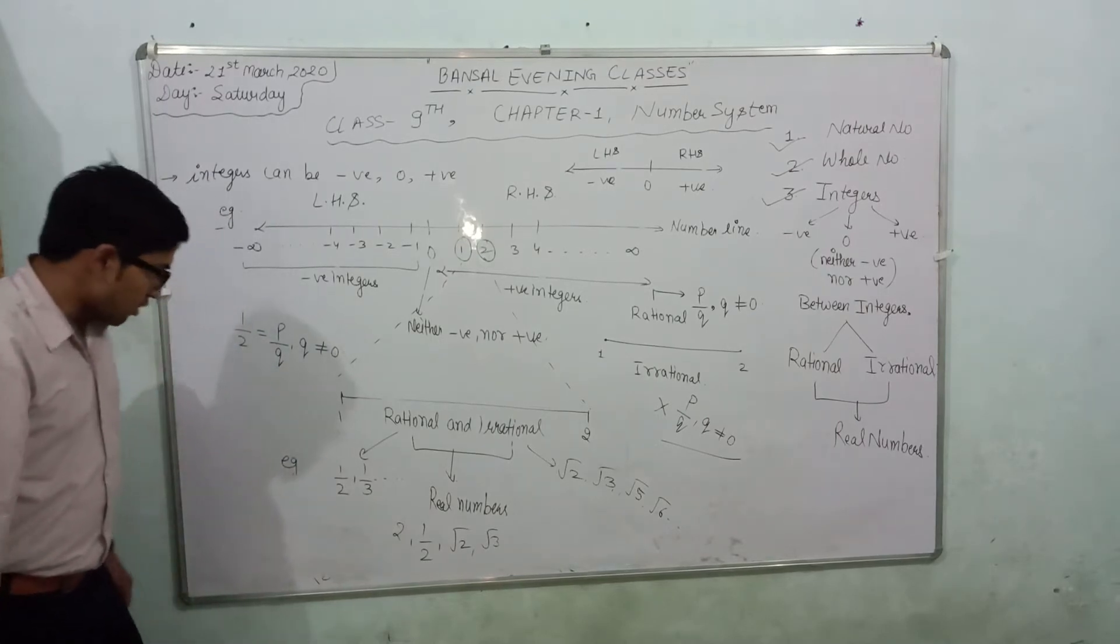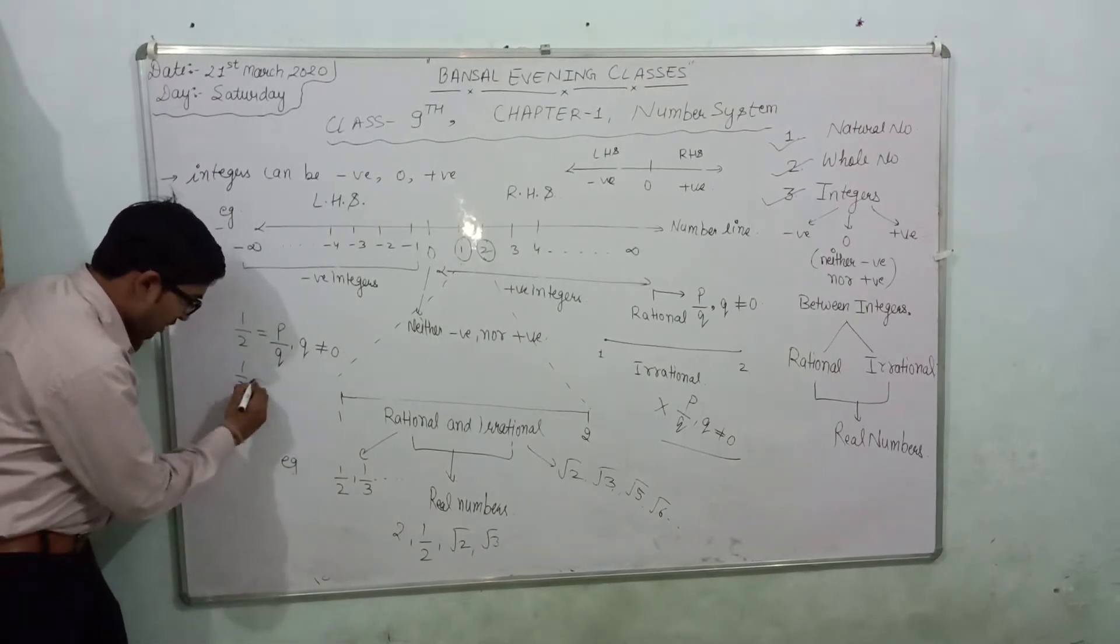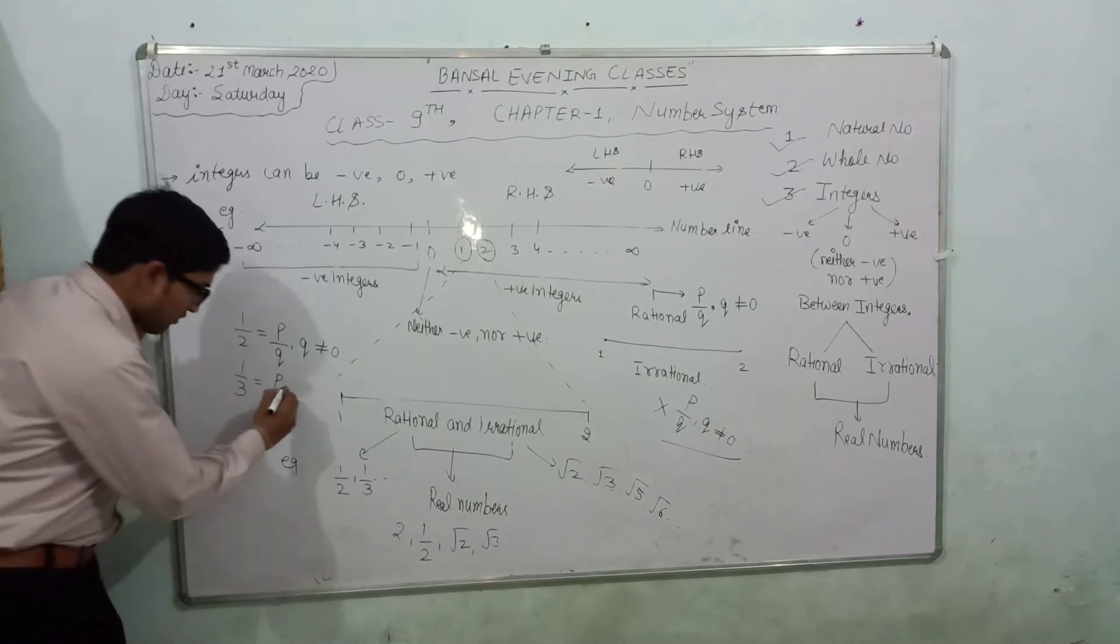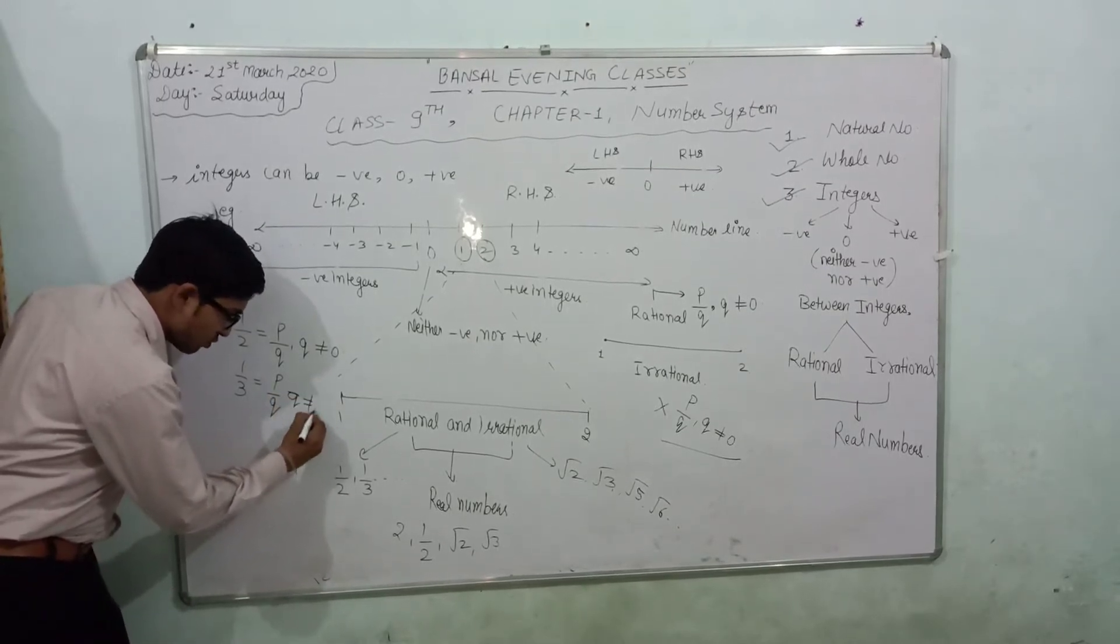Now, if I move on, one by three is also known as a rational number because it is also written in the form of P by Q, where Q is not equal to zero.